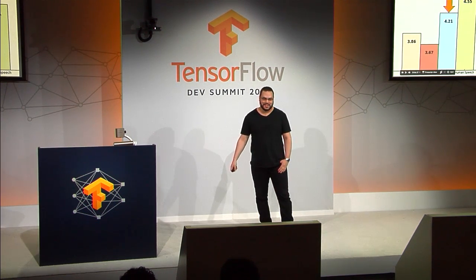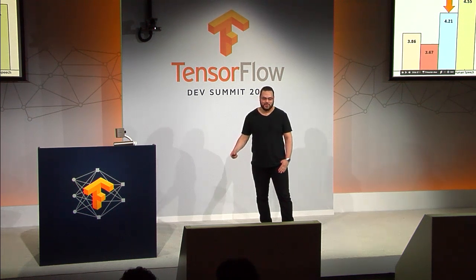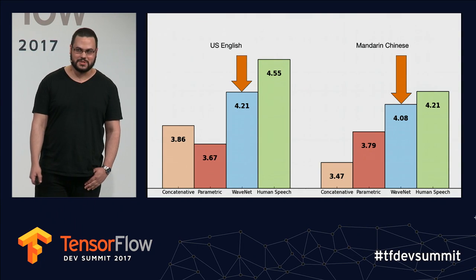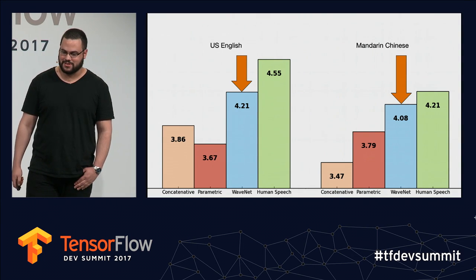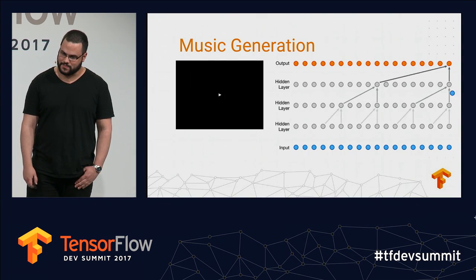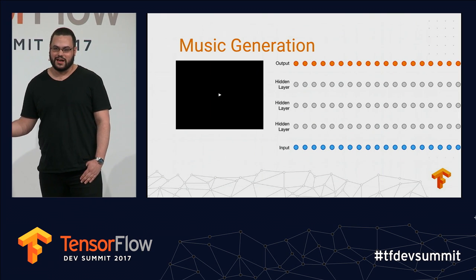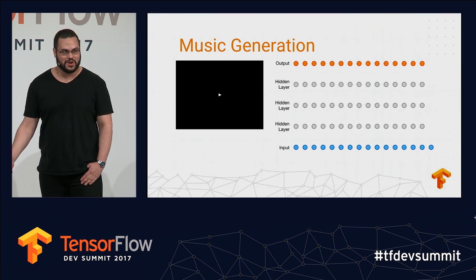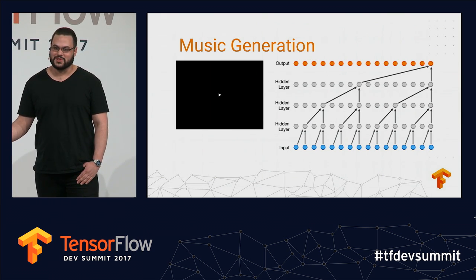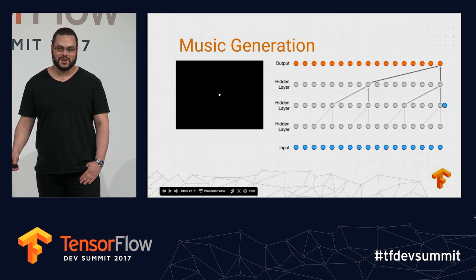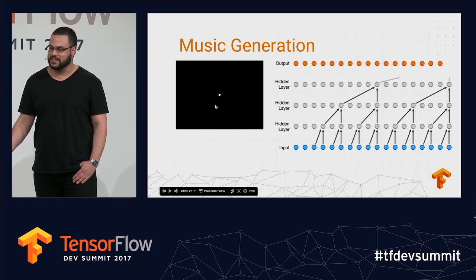We compared WaveNet against other models through the use of opinion scores, and what we found — by human ratings — was that it narrowed the gap to human speech by about 50%, which is great. And because WaveNet models the raw audio signal, we can also get it to produce sounds other than speech. Here's an example where we trained it on a corpus of classical music, where it's able to generate realistic-sounding piano notes on a moment-to-moment basis.